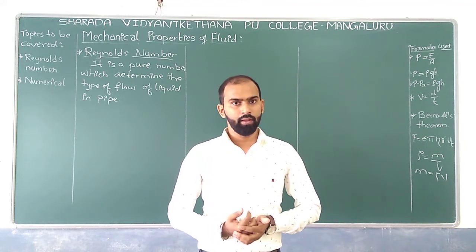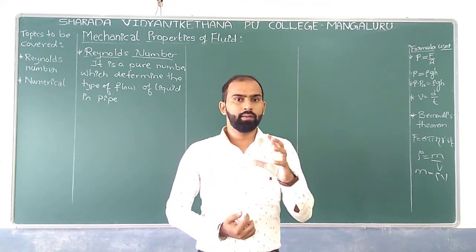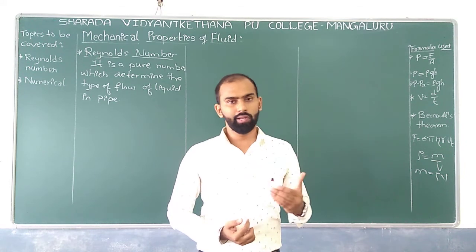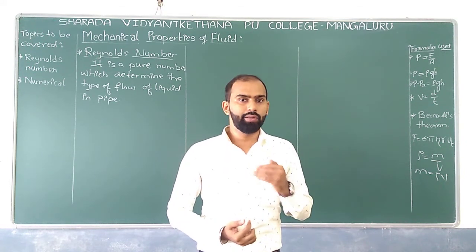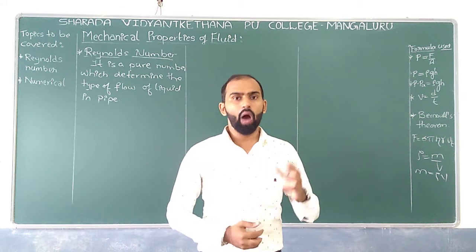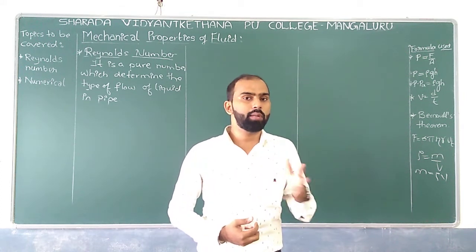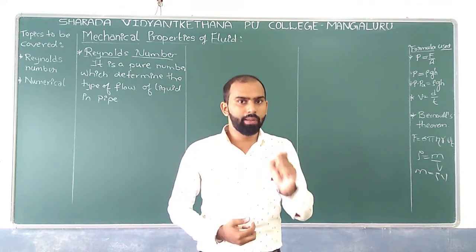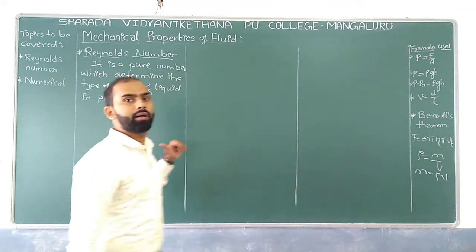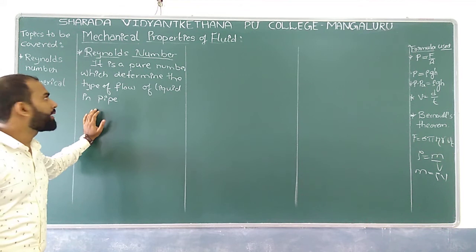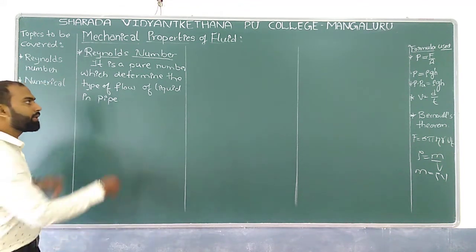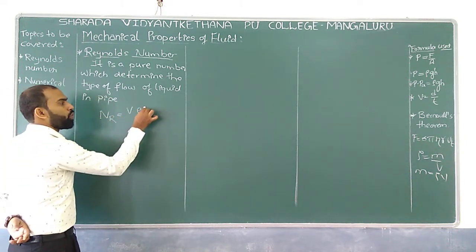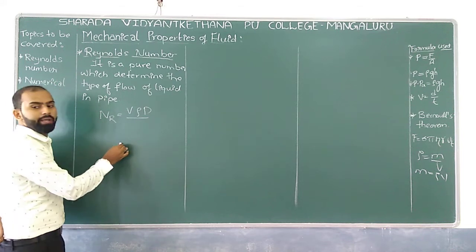Reynolds number — so far we have discussed that there are different types of flow for a liquid we can have: streamline flow and turbulent flow. How do you say that the fluid is streamlined or turbulent? There should be some certain things to indicate it. By having the relation of Reynolds number, given by Reynolds, that is NR which is equal to v into rho into d divided by eta.